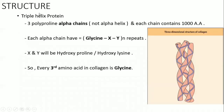Now for the structure. Collagen is actually a triple helix protein — not an alpha helix, but a triple helix. What does triple mean? It has 3 polyproline alpha chains, not alpha helices. Each chain contains about 1000 amino acids arranged in a glycine-X-Y repeat format. The X and Y positions can be hydroxyproline, hydroxylysine, or both, depending on the type of collagen.